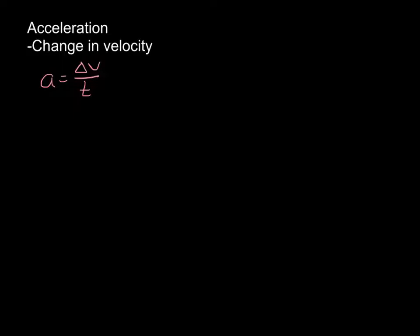So that means its direction is important. We indicate direction with a positive and a negative. Let's quickly look at a couple of different situations we could have for both acceleration and velocity and what that means.